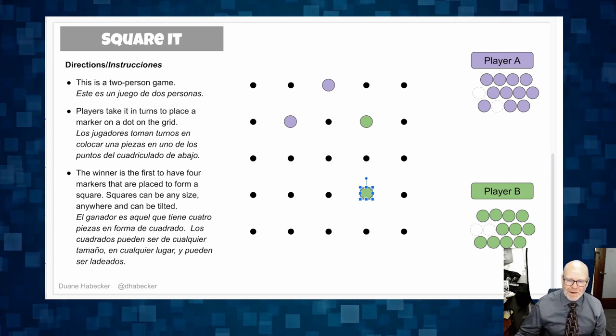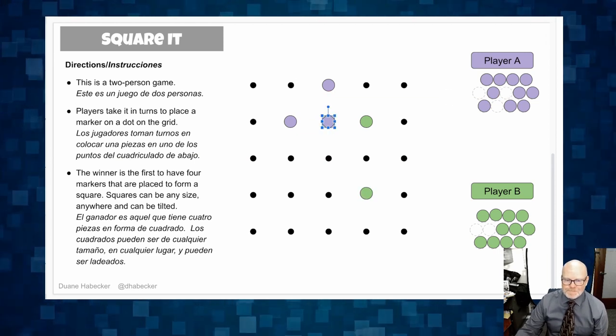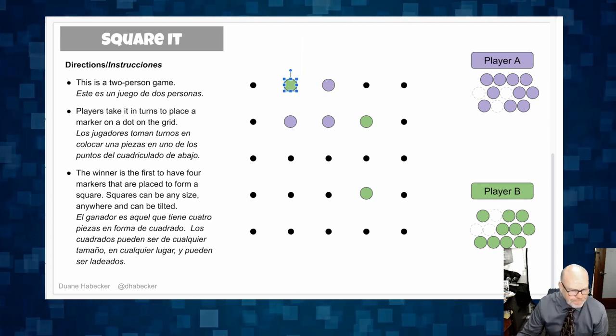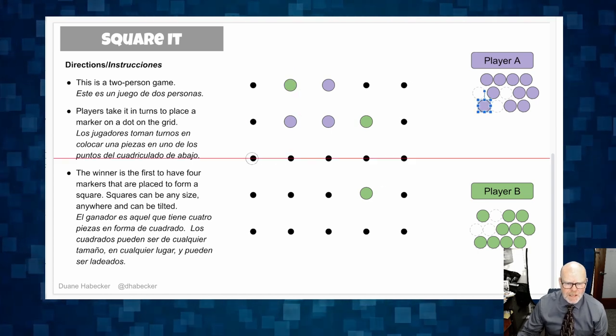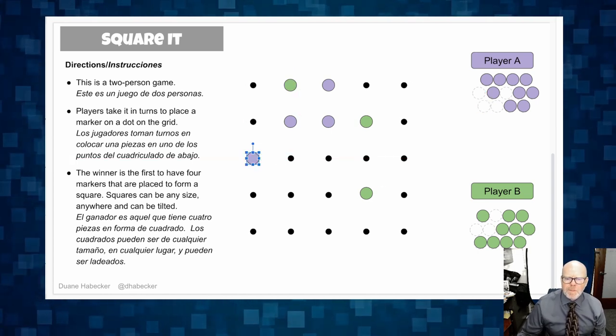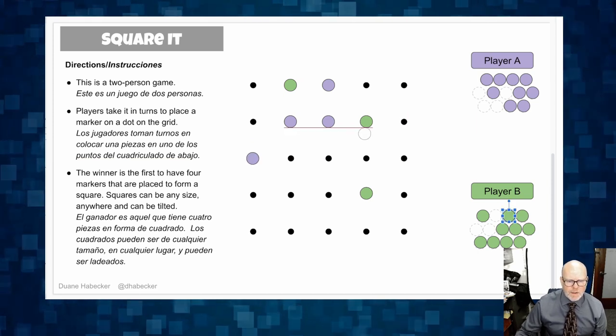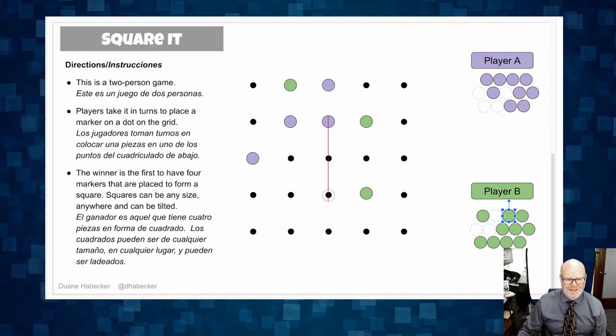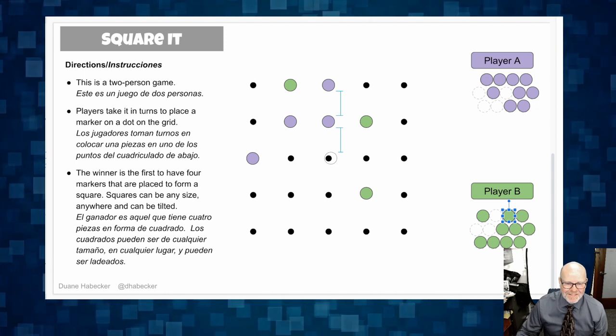And then player A goes, I don't know, right there. Uh-oh, player B's got a block. There's a block right there. Now player A goes, maybe player A is going to try and get creative over here. And then player B goes, oh, I don't know... I don't know about right there. Good enough.